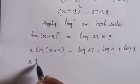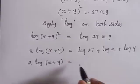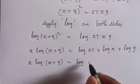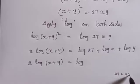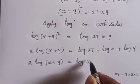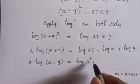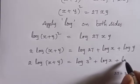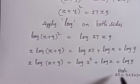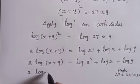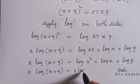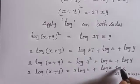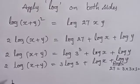As it is, LHS is 2 log x plus y equals RHS. Now 27 equals 3 times 3 times 3, so 27 equals 3 cube. Using log of a power m equals m log a, we get 3 log 3. So 2 log of x plus y equals 3 log 3 plus log x plus log y. Hence it is proved.